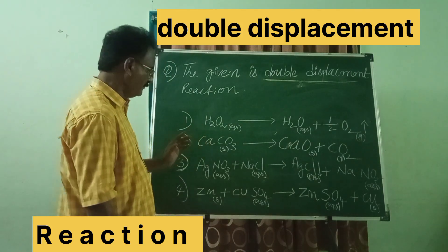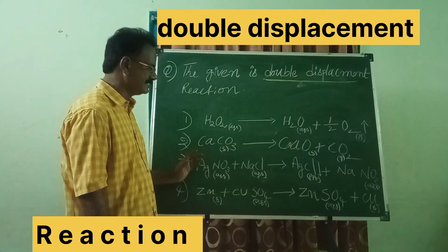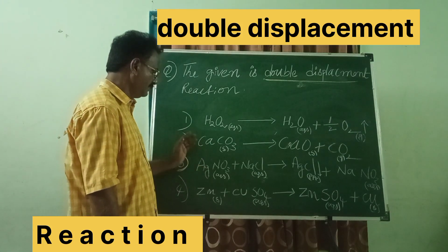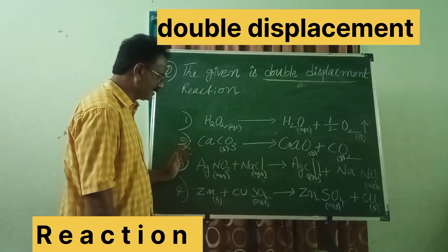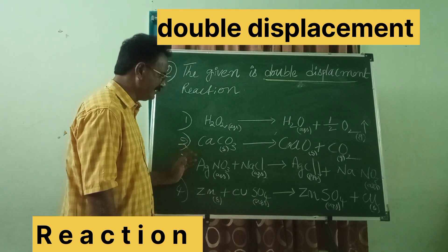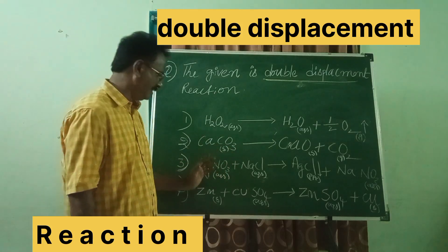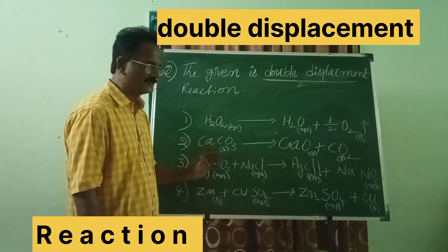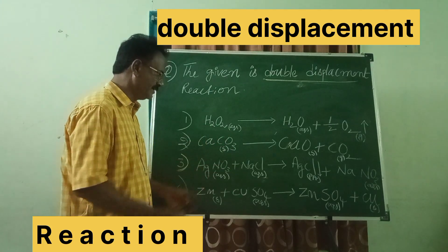When you concern with the third reaction, let us see what is happening here. Here, AgNO3, we are reacting AgNO3 with NaCl. During the course of reaction, the replacement or displacement of both ions are taking place.